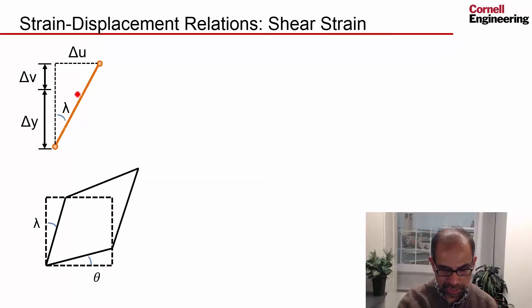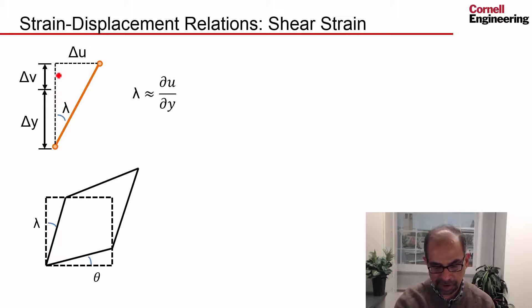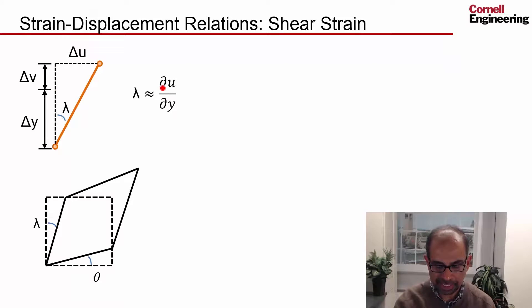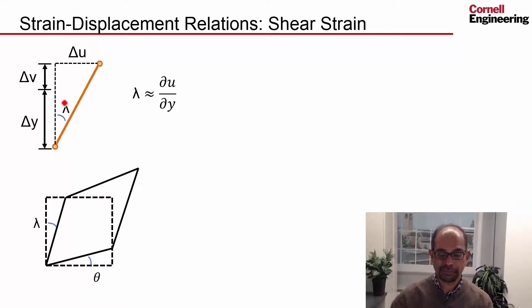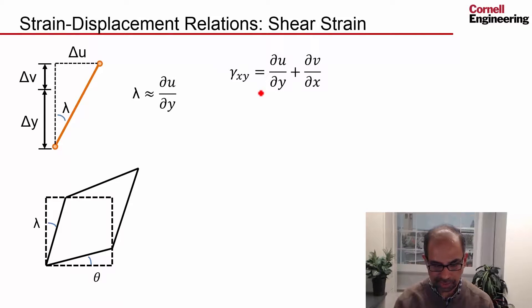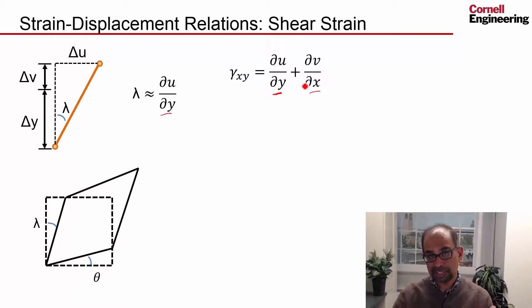This corner is going to move with respect to the other corner in the x-direction by an amount ΔU. If I go through the same kind of development as I did for θ, I'll get the expression for λ: λ = ∂u/∂y. Intuitively, if the gradient of u in the y-direction increases, then u here will be more different from u there, and so λ will increase. The engineering shear strain is θ plus λ, giving the cross derivatives ∂v/∂x + ∂u/∂y, with the embedded assumption that the shear strains are small.